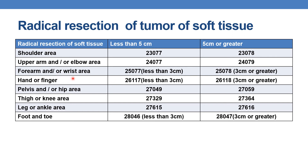Next is forearm and/or wrist area — the diameter threshold is different here. For radical resection of tumor of soft tissue of forearm and/or wrist: if less than 3 centimeters, CPT is 25077; if 3 centimeters or greater, it is 25078. Coming to hand or finger, where the diameter is also different: if less than 3 centimeters, CPT is 26117; if 3 centimeters or greater, it is 26118.